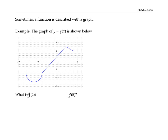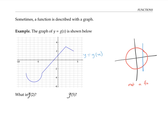Sometimes a function is described with a graph instead of an equation. This graph is supposed to represent the function g of x. Not all graphs actually represent functions — for example, the graph of a circle doesn't represent a function because it violates the vertical line test: you can draw a vertical line and it will intersect the graph in more than one point. But our graph satisfies the vertical line test — any vertical line intersects the graph at most once, meaning every x value has at most one corresponding y value.